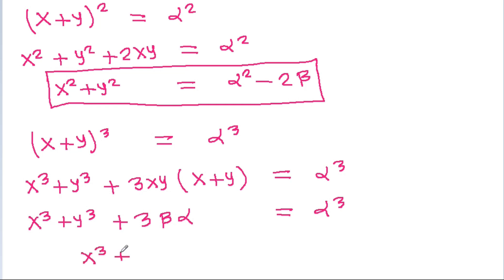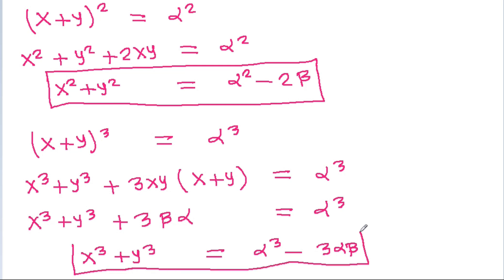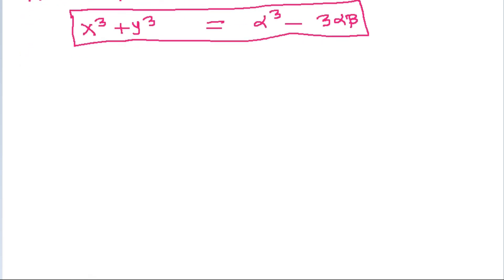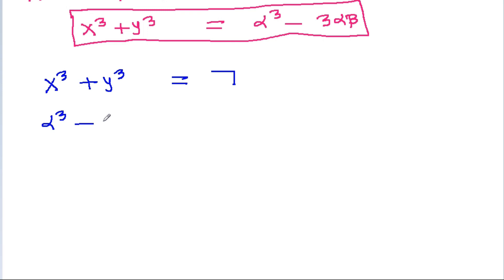So x³+y³=α³-3αβ. Since x³+y³=7, we have α³-3αβ=7. This is equation 1.